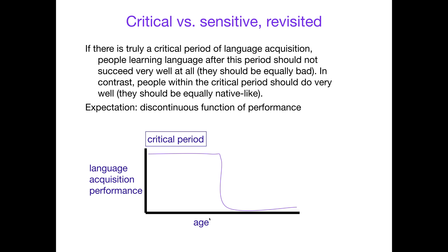So if we imagine a graph with age of initial exposure on the x-axis — from zero all the way up to however old — and on the y-axis, language acquisition performance or your ability to reach native level proficiency: if you start being exposed to that language within the critical period, it doesn't matter if you started at age zero or age whenever the critical period ends — you're equally as good. But if you miss it, we see this discontinuous function of performance.